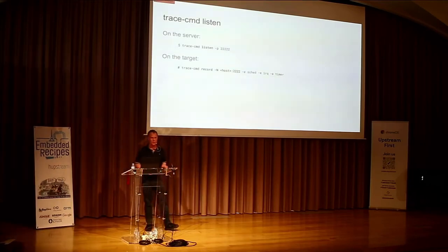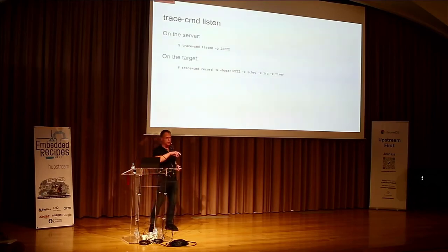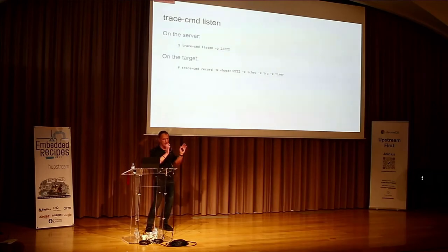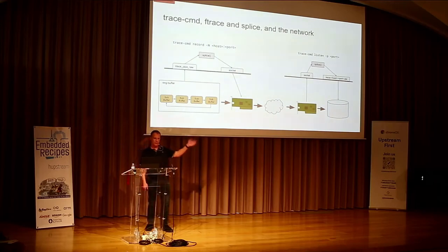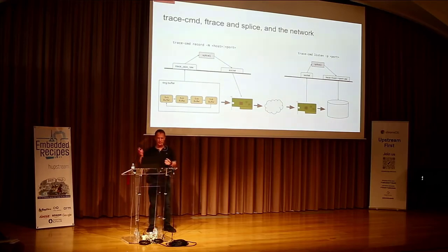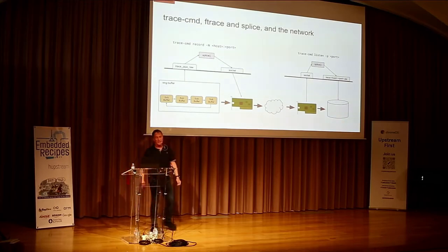On the server — like your desktop — you do tracecmd listen, dash P, some port number, and listen. On the target, you do tracecmd record, dash capital N for network, pass in the host, and do your tracing with dash E events. I wanted scheduling events, IRQ events, timer events — all going over the network. On the record side, it uses splice to move the stuff over the network. On the listener side, it reads the socket and uses splice to put it into trace.dat.